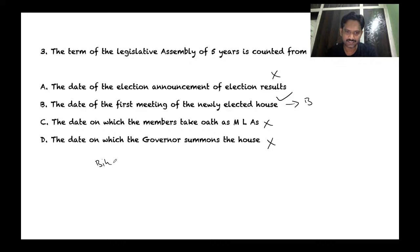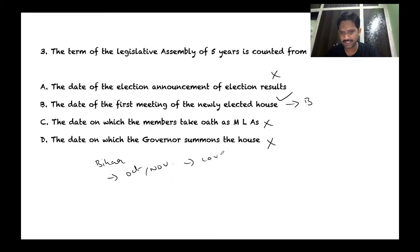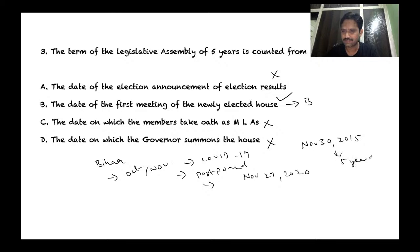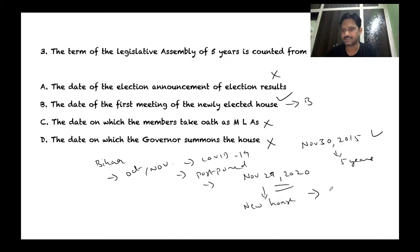This is relevant in the context of Bihar, where assembly elections were expected in October and November. Due to COVID-19, there was talk of postponement, but the constitution does not allow it. The term of the Bihar assembly ends on November 29, 2020, counting from the first meeting on November 30, 2015. A new house must be elected by then.